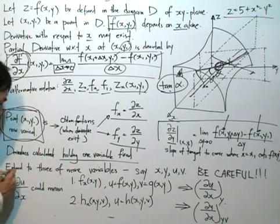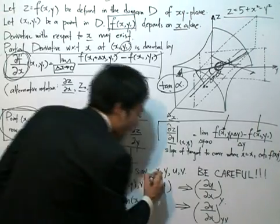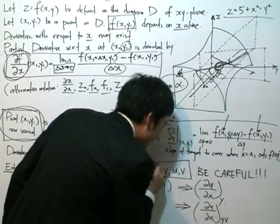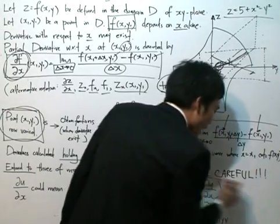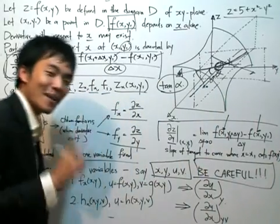we can now extend to three or more variables, say x, y, u, and v. This may be something new to you, so we should listen up carefully because we should be extra cautious over here, be extra cautious.